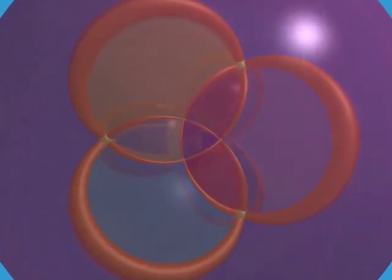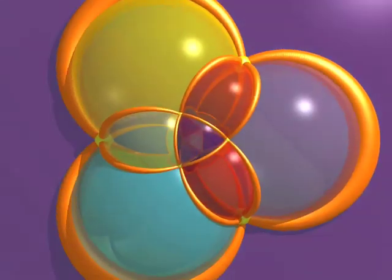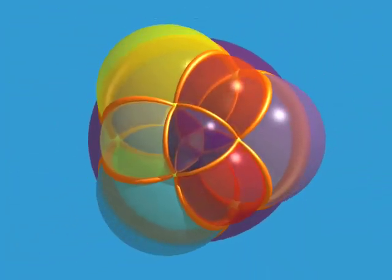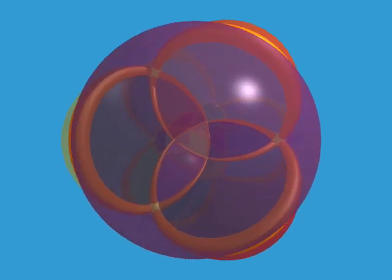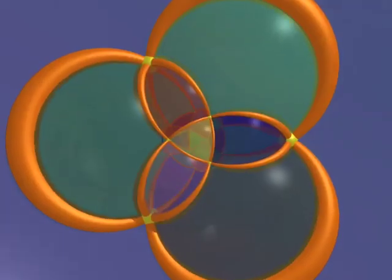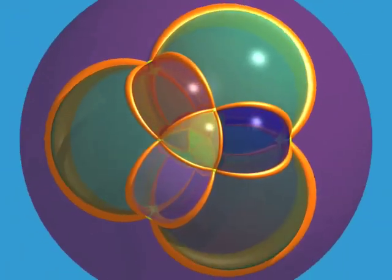Twenty-four vertices, ninety-six edges, ninety-six triangles and twenty-four octahedra. Eight edges start at each vertex.